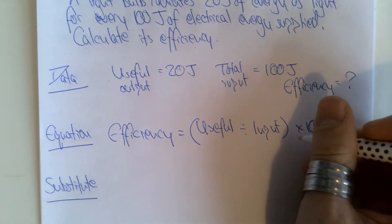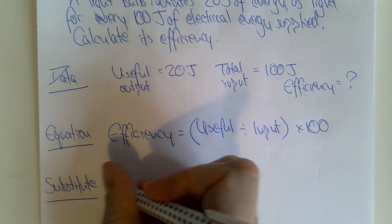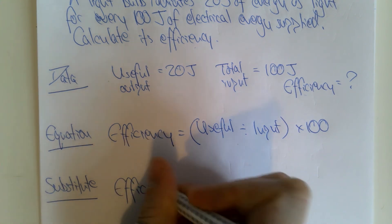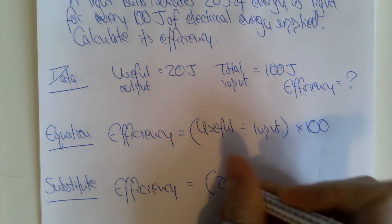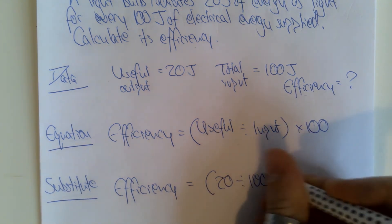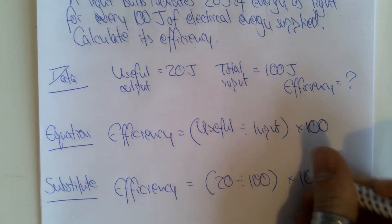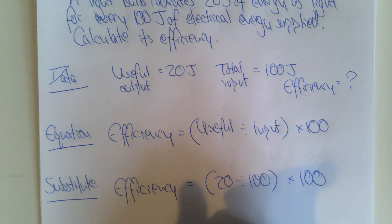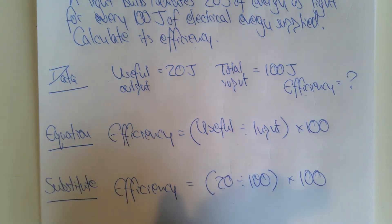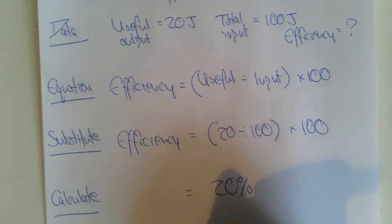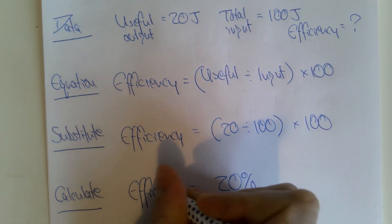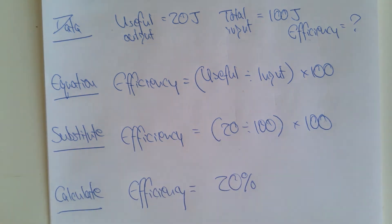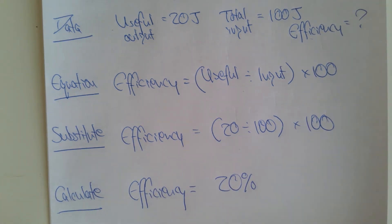To express as a percentage we multiply by 100. Substituting in: useful = 20, total input = 100, so (20 ÷ 100) × 100 = 20%. The light bulb has an efficiency of 20%.